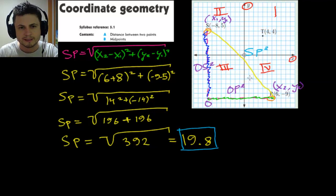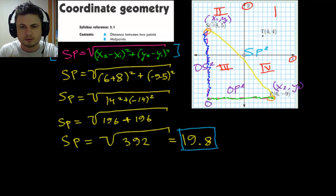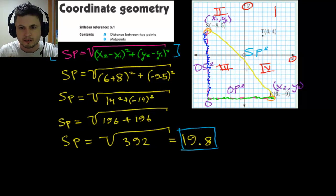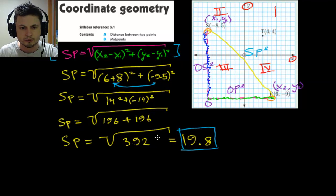In a nutshell, we used the Pythagorean theorem to find the distance on a coordinate plane, and this formula is given on the formula sheet. All you have to remember is to label one point as (x1, y1) and the other as (x2, y2), then use the coordinates to calculate the distance. Which point is labeled first doesn't matter — the result is still the square root of 392, approximately 19.8.